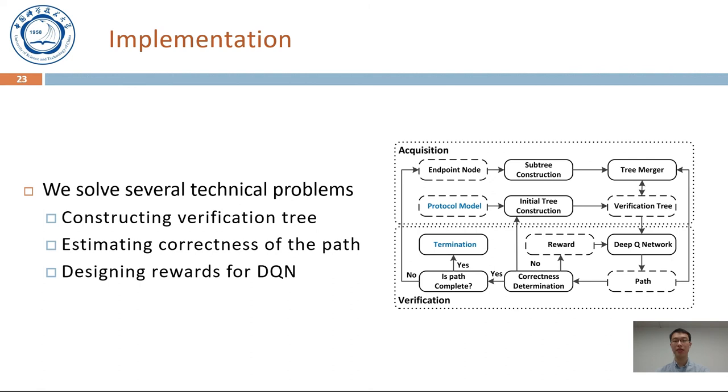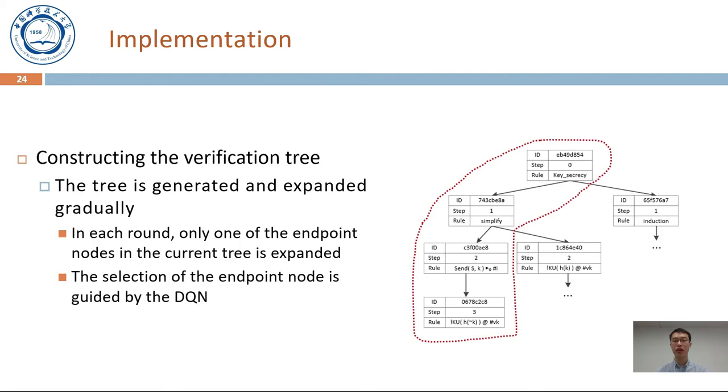In our implementation, we solve several technical problems, such as constructing verification tree, estimating the correctness of the path, and designing the rewards for the DQN. In the tree construction process, the tree is generated and expanded gradually to avoid memory explosion. In each round, only one of the endpoint nodes in the current tree is expanded. The selection of the endpoint node is guided by the DQN.